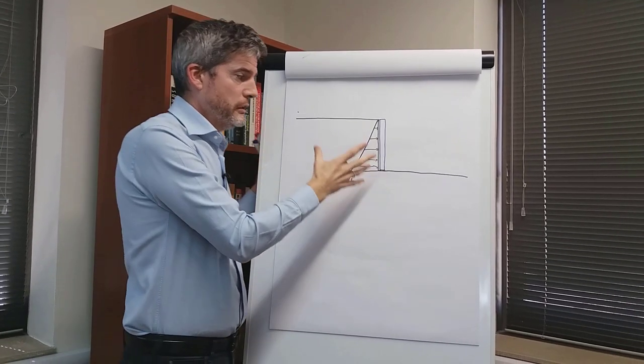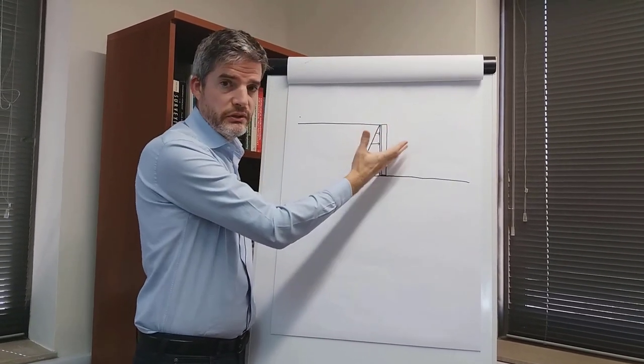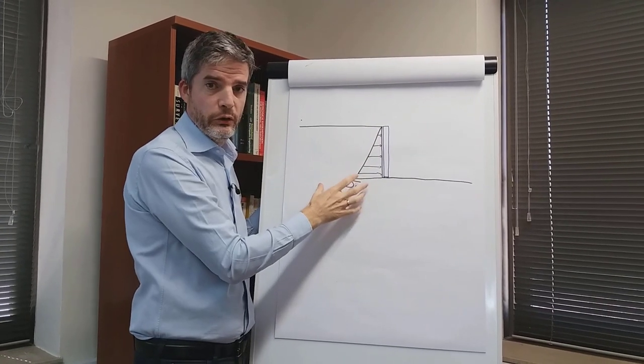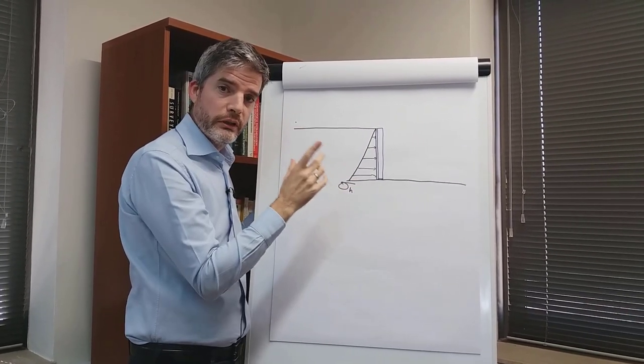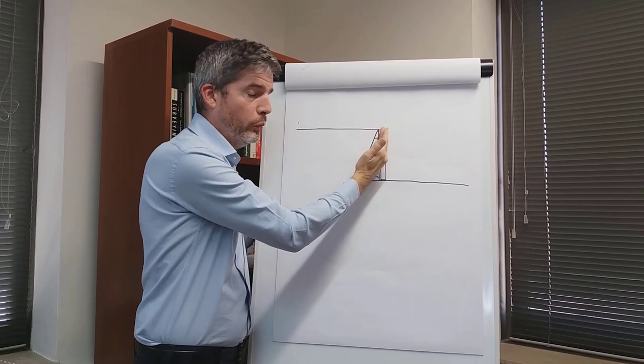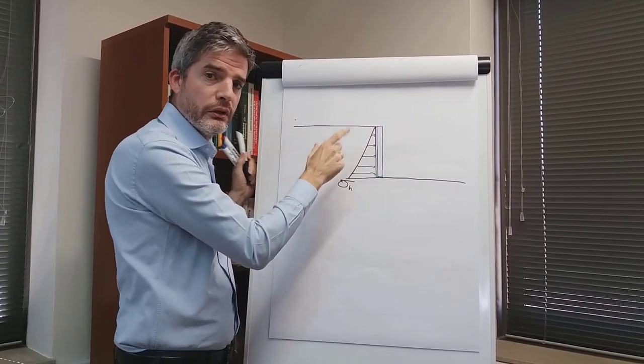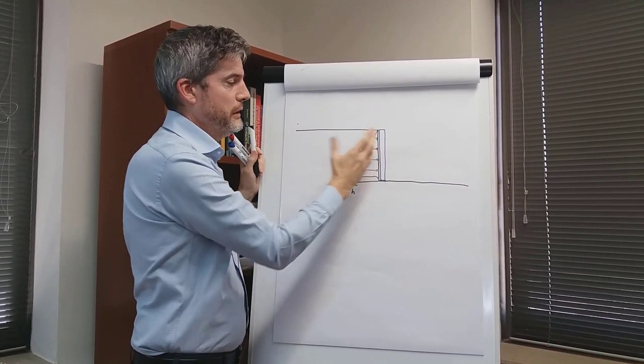So that is what your retaining wall needs to resist. Now if you're designing for serviceability, deformations, deflections, that sort of thing, then it's this at-rest earth pressure you should be looking at. But for ultimate limit state design where we're checking that the wall will not fail, then we look at something slightly different, it's a limiting stress.